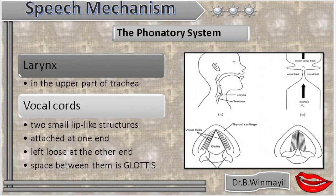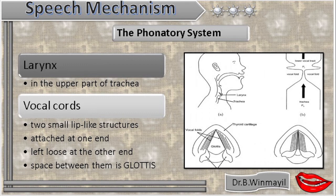Thirdly, we have the phonatory system. The phonatory system helps us to make sounds — it lies in the throat. Larynx and vocal cords are the main constituents of the phonatory system. The larynx lies in the upper part of the trachea, and the vocal cords lie within the larynx. The vocal cords consist of two small lip-like structures; they are attached at one end and left open at the other end. The space between them is called the glottis. The glottis and its vibration, when pulmonic air comes in and out, produces sounds. That is why the glottis is an essential element for the articulation of sounds.